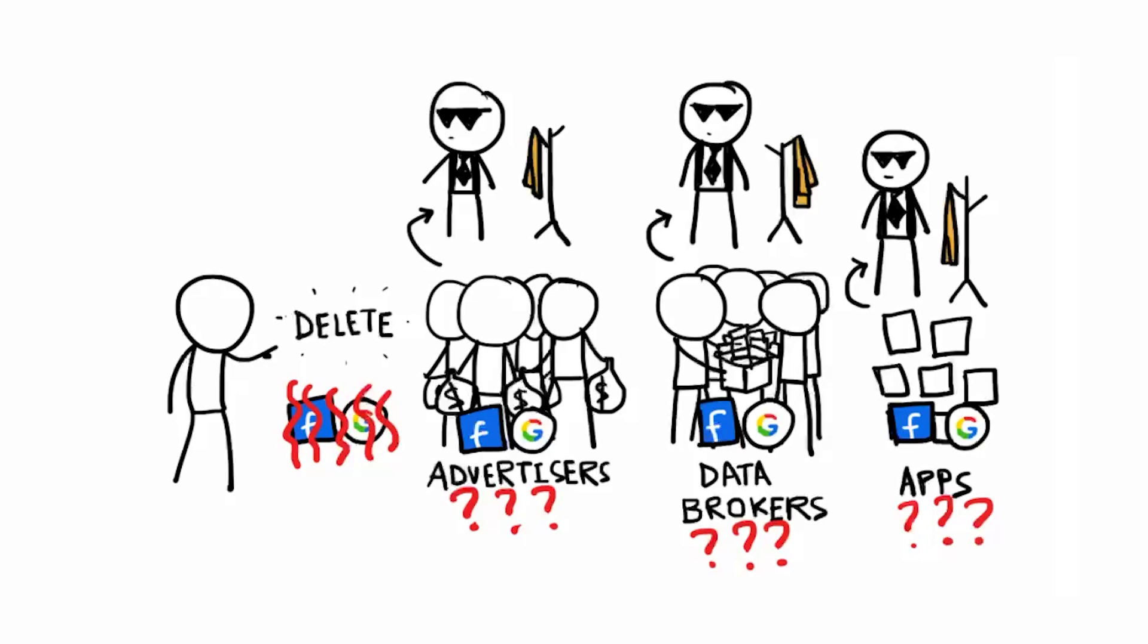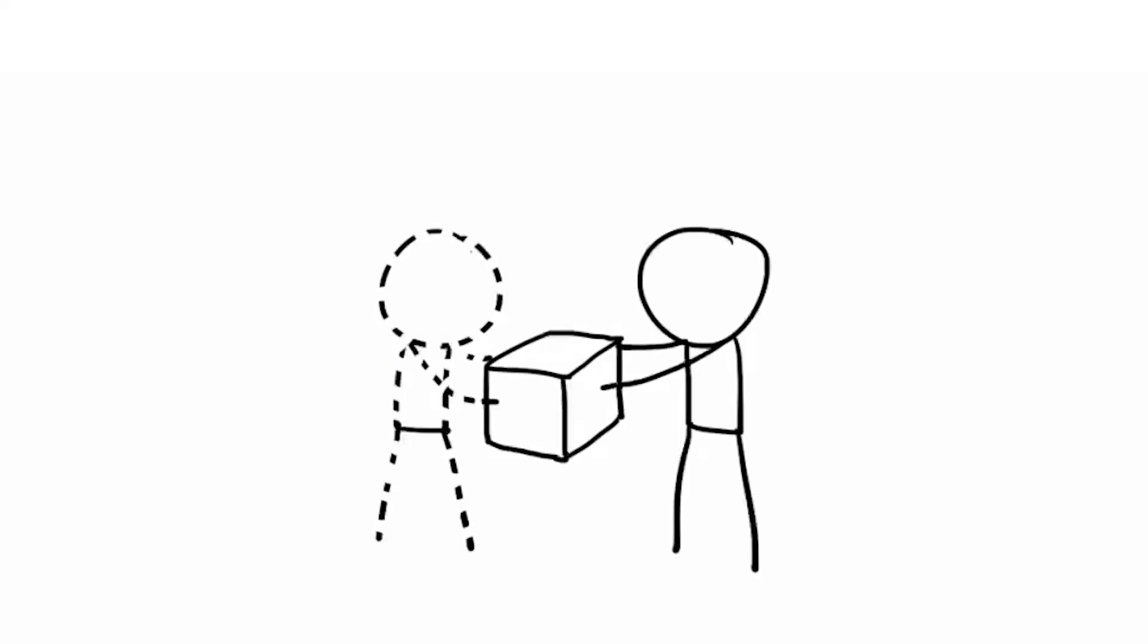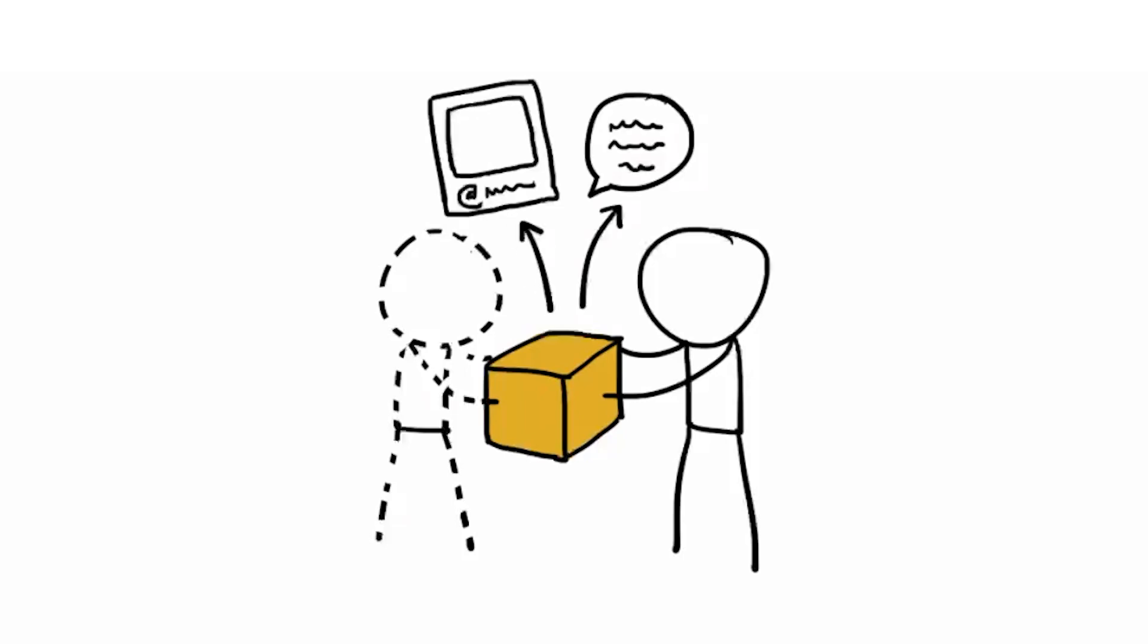Your data might live on, bought, sold, and analyzed. And what about the stuff you shared? That photo you tagged your friend in? That message you sent? Your words are now part of their data. You can't delete someone else's digital memories.